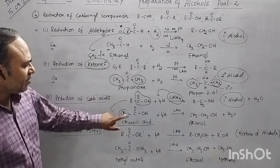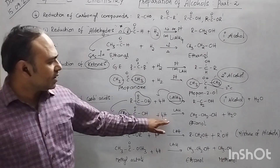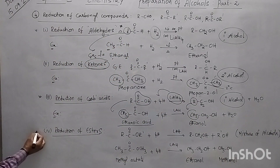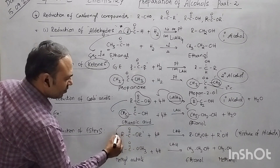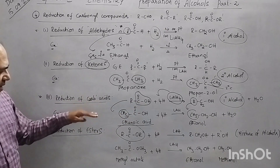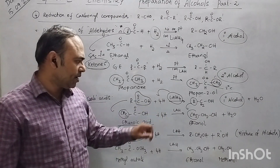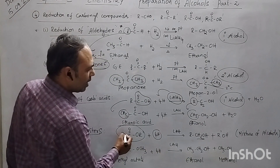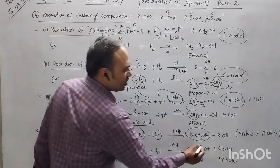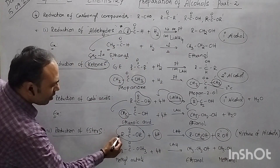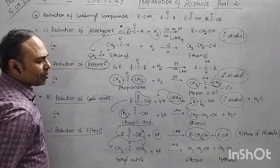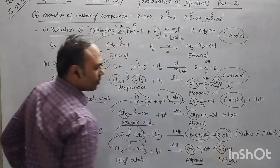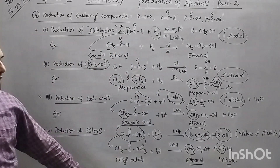In place of R, taking a CH3 group, the compound is ethanoic acid, and reduction gives ethanol. The last sub-method is reduction of esters. An ester has the RCOOR' group. Using lithium aluminium hydride, which provides four nascent hydrides, you get a mixture of two alcohols: one from R and one from R'. If R is CH3 and R' is also CH3, you get ethanol from the first part and methanol from the R' part. So for methyl acetate, the products are ethanol and methanol.